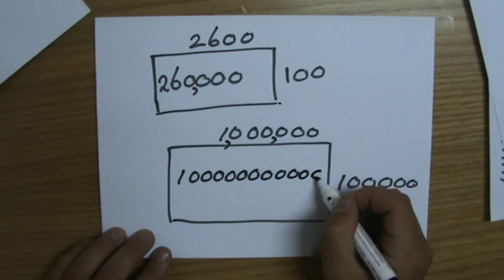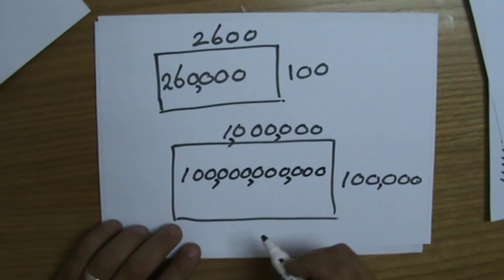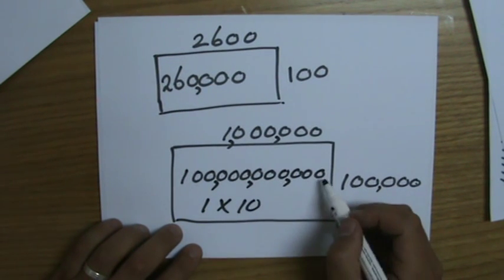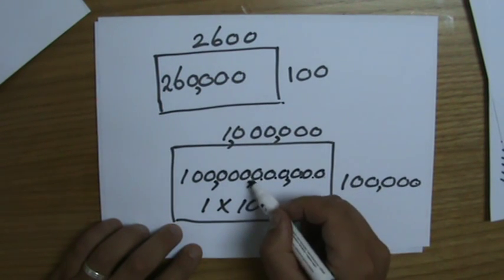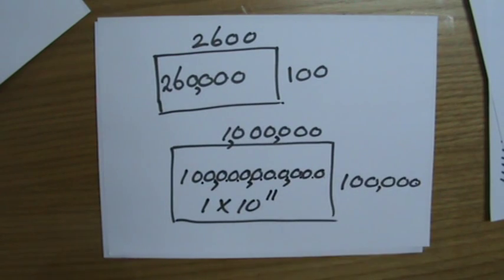Wow, that is a huge number, isn't it? Let's write it in standard form: one times ten to the power - let me count - one, two, three, four, five, six, seven, eight, nine, ten, eleven. One times ten to the power eleven.